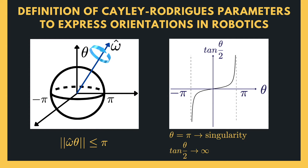θ equal to π is the singularity of the Cayley-Rodriguez parameterization of orientation, because tangent of θ/2 approaches infinity at that angle, and this is when trace of R is equal to minus one. Recall that the trace of a matrix is defined as the sum of the diagonal terms of the matrix. For more information, please refer to the lesson on the exponential coordinate representation of orientation. Now let's see how these parameters are derived when an orientation is represented by the rotation matrix R in SO(3).